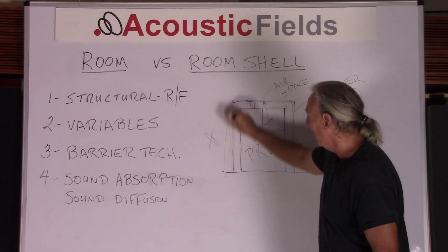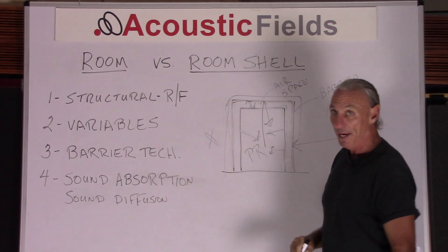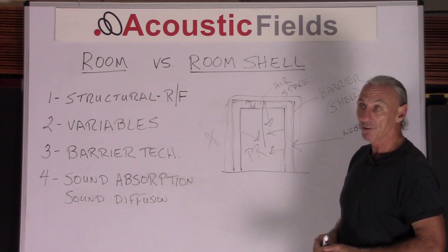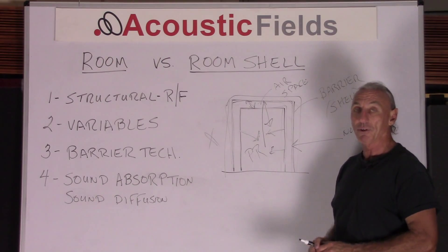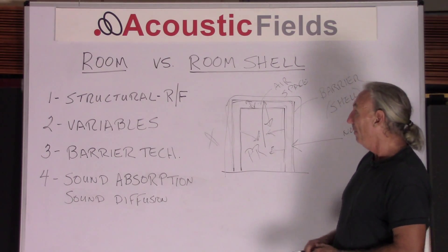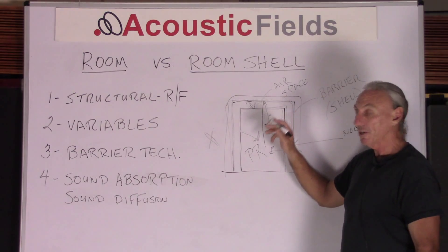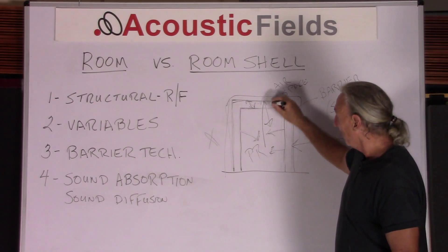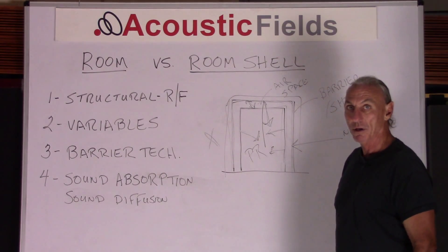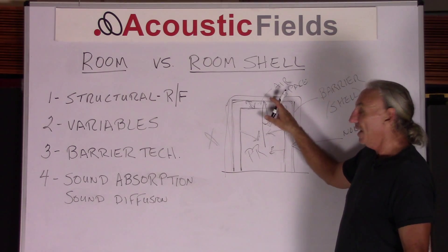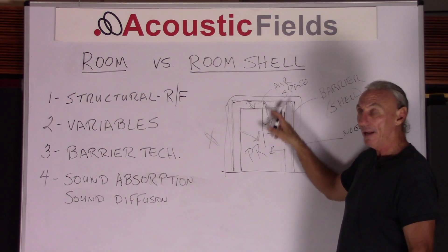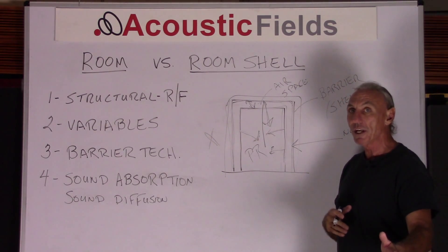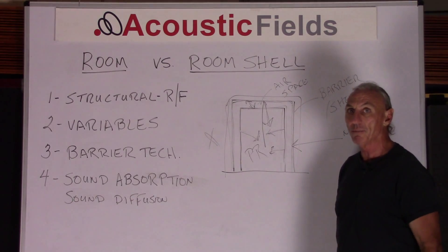A lot of people use concrete for the outside barrier — it makes sense, lots of mass, expensive, but it does achieve some isolation properties and has good sound transmission class ratings. However, it's a very rigid structure. When energy leaves the room and strikes the shell, it's reflected back in. So we need some kind of balance between the structure of the room and the outside barrier — what I call a rigidity-flexibility ratio that you must maintain.